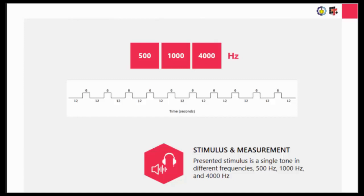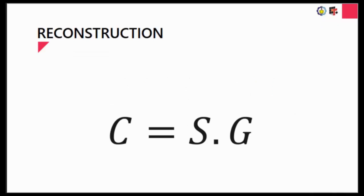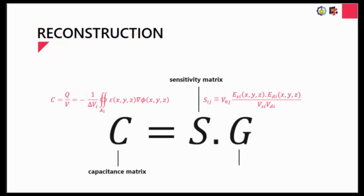The measurements were run in three sessions at different frequencies. The reconstruction of the ECVT brain image is based on three main formulas: the capacitance matrix, the sensitivity matrix, and the permittivity matrix. The permittivity matrix is what we find and construct as the ECVT image.